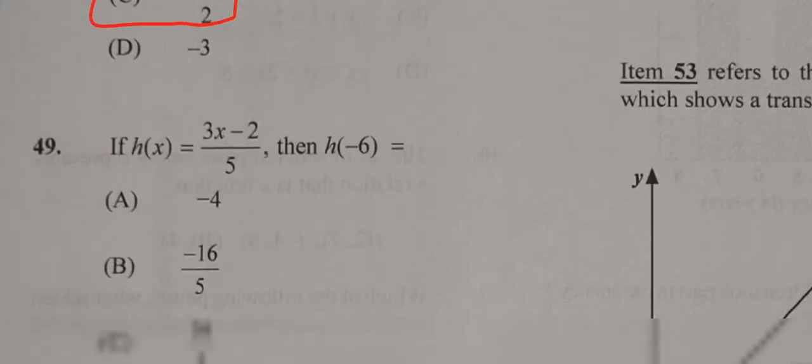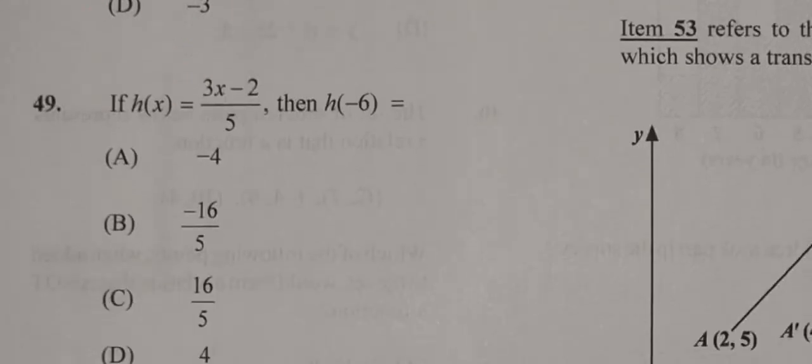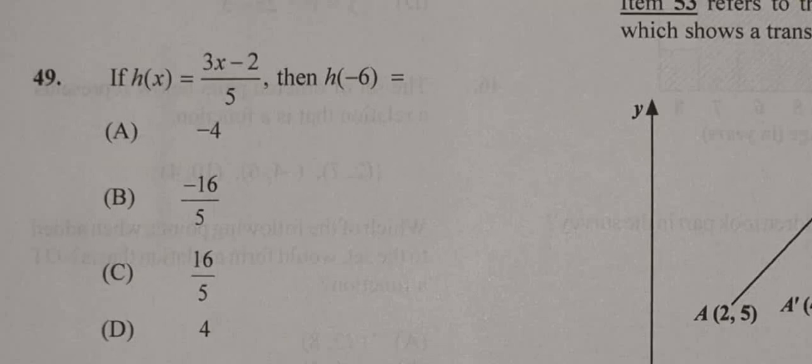Now, let's look at the other one, 49. It says h of x equals 3x minus 2 over 5, then h of negative 6. So what we've got to do is replace this x here with negative 6. So instead of saying 3 times x, you're saying 3 times negative 6, which is negative 18 minus 2 over 5.